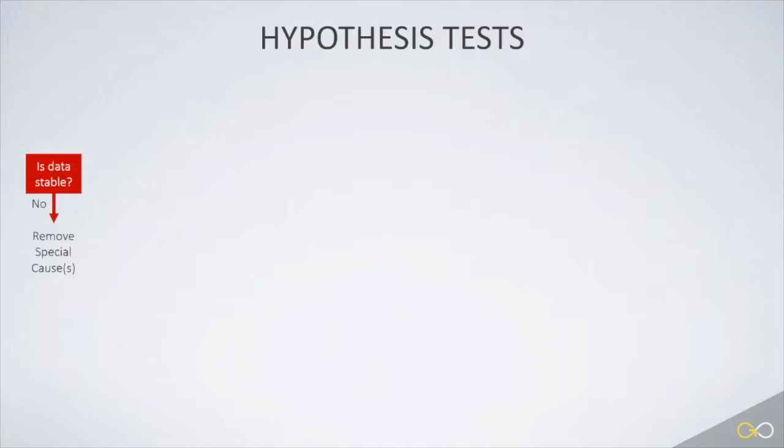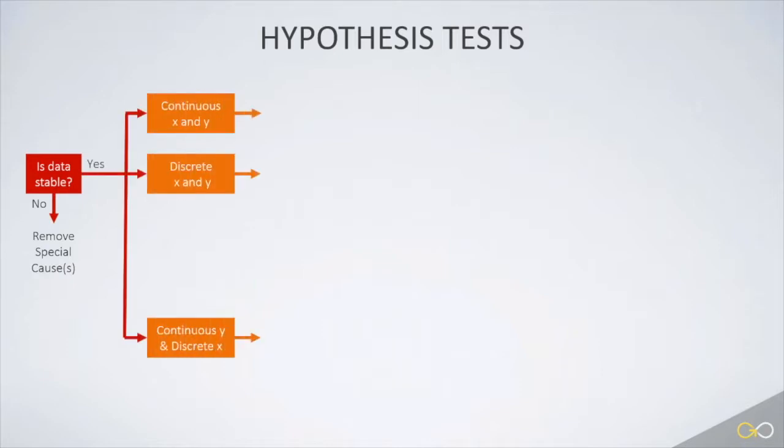So we start by determining if the process is stable. If not, address the special causes. If the process is stable, then we consider the type of data. Is it discrete, continuous, or some of both?